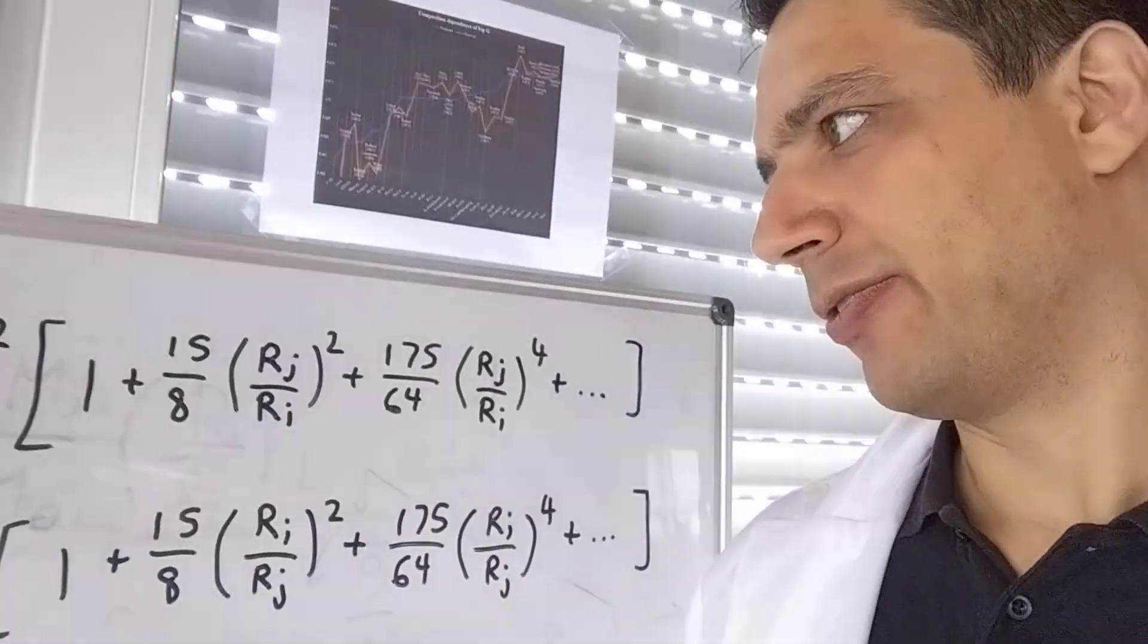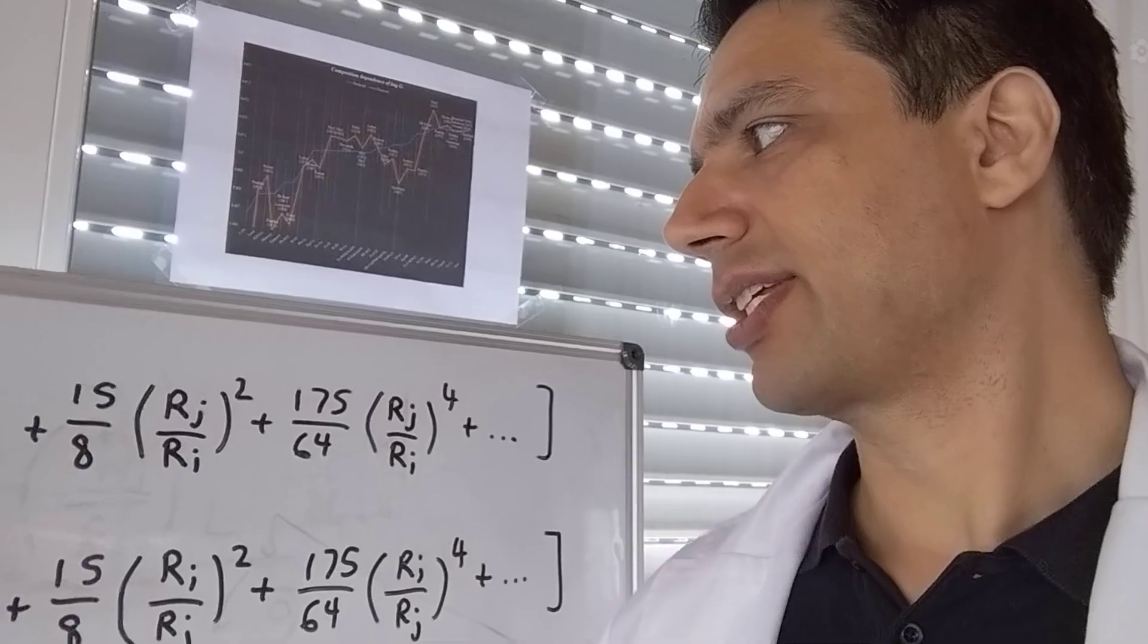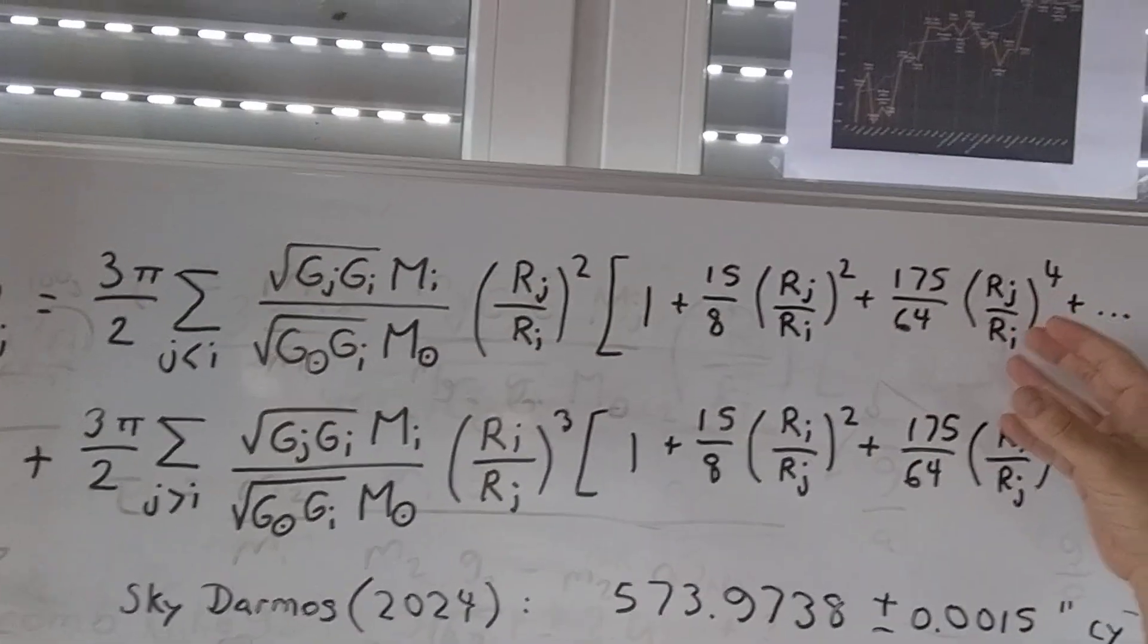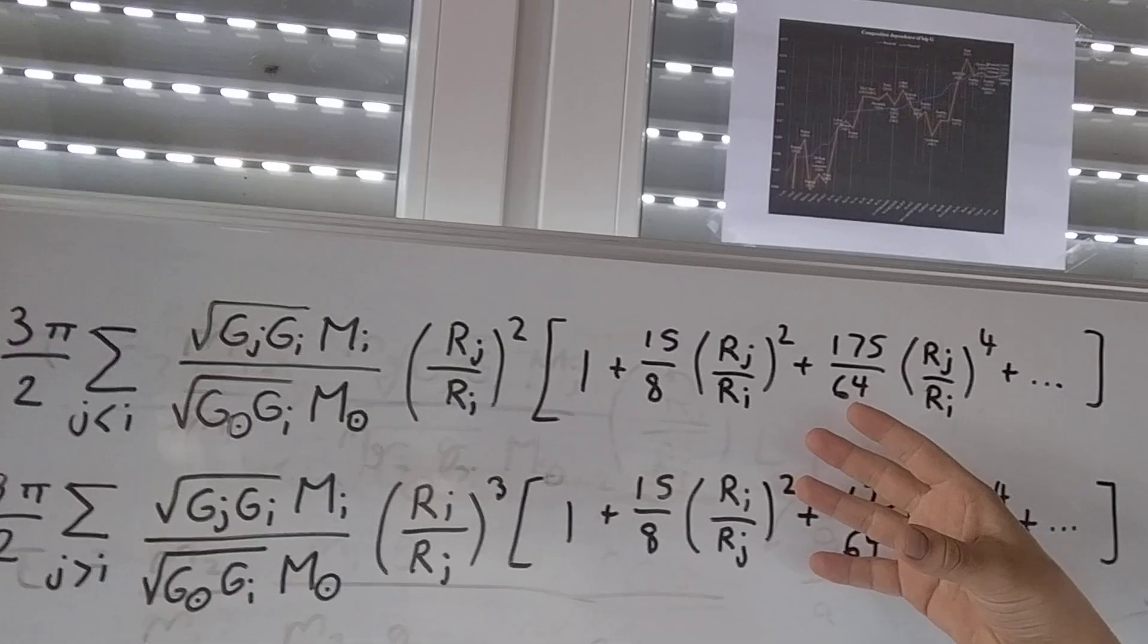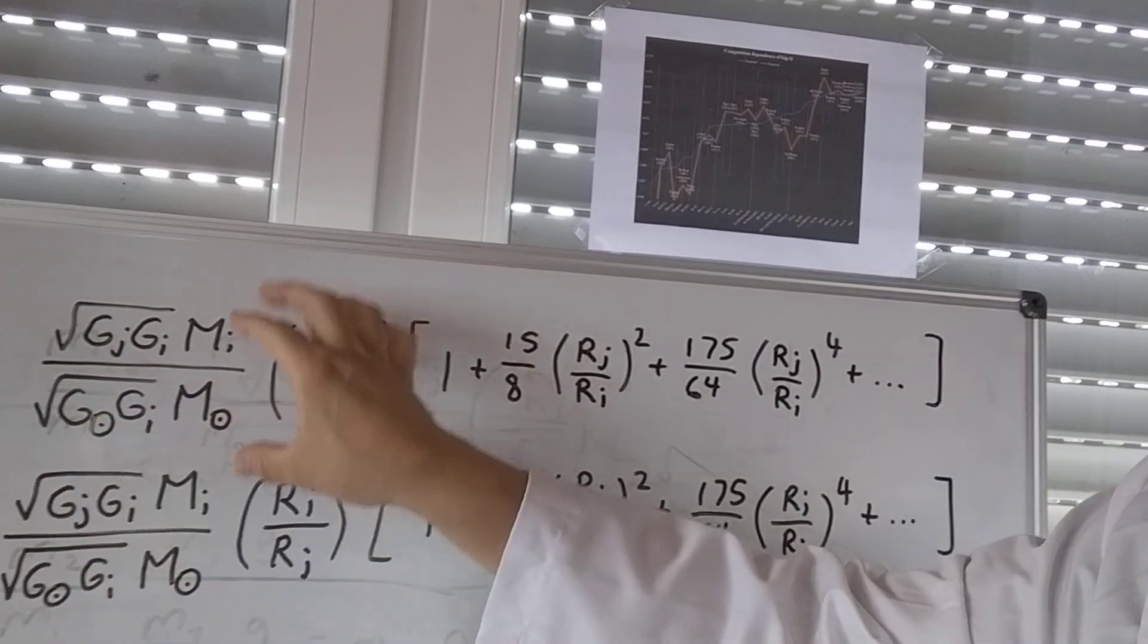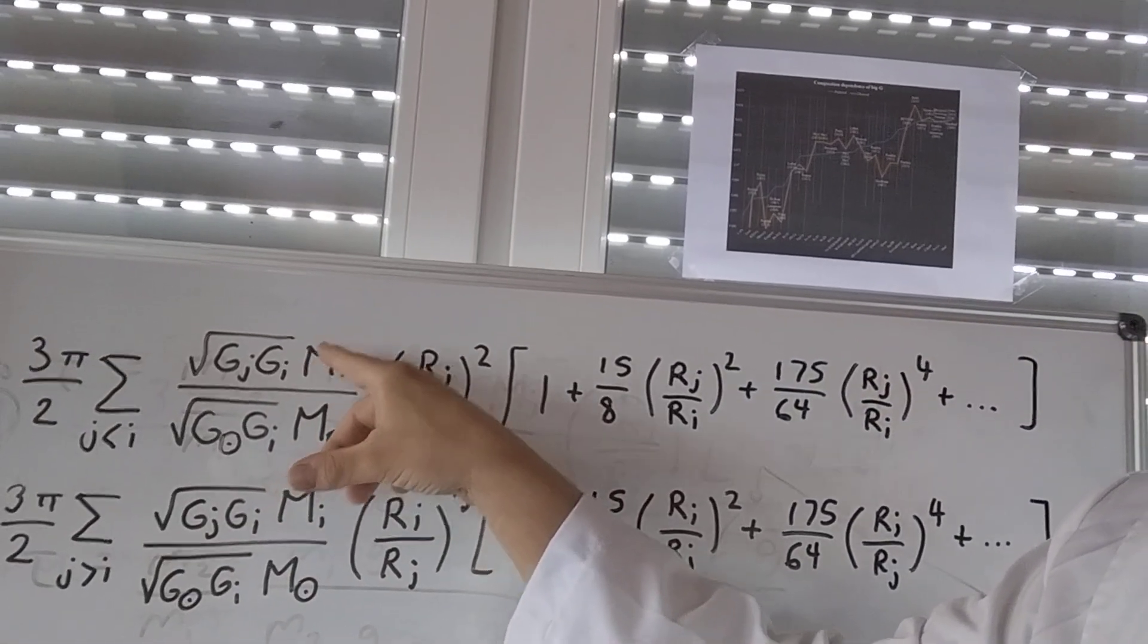But we can calculate the difference between Newtonian physics and my composition dependent physics by calculating this one time with my theory and then again with Newton's theory, where you don't have these terms and where the masses are different. So these are different masses.